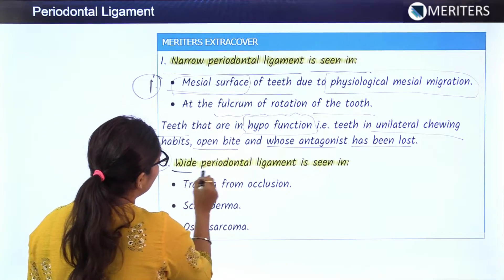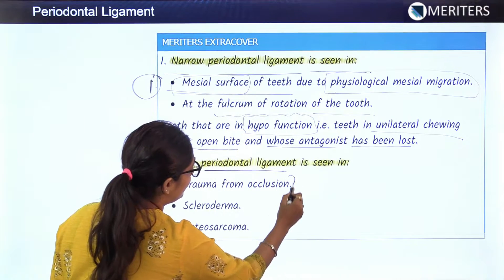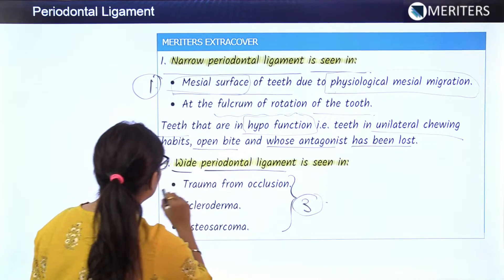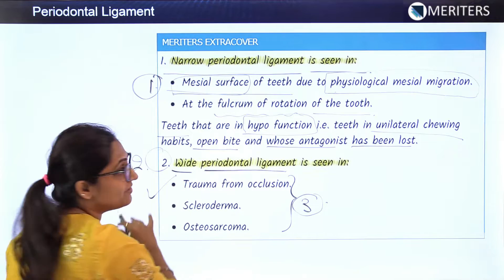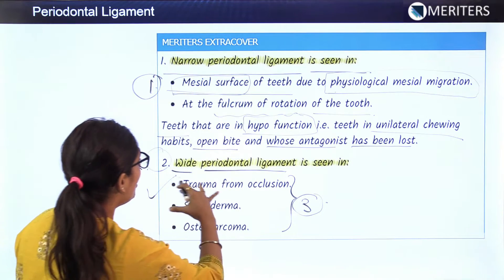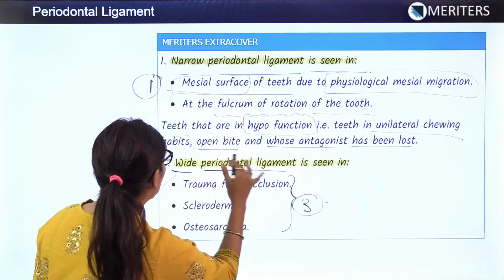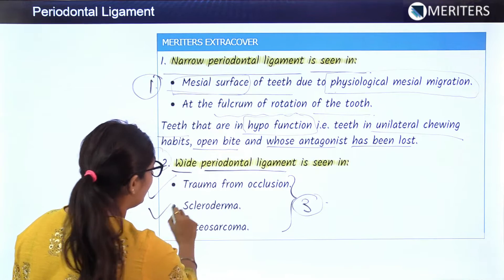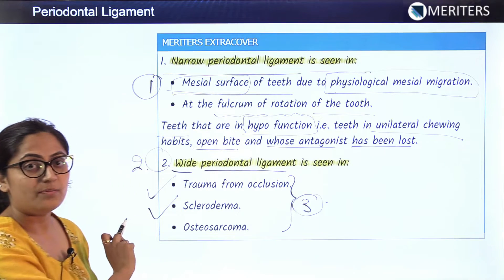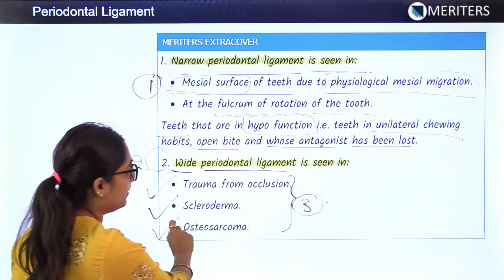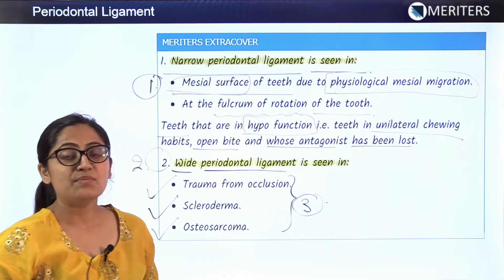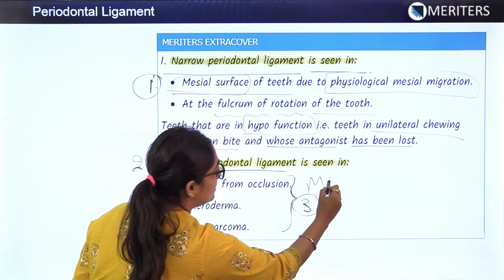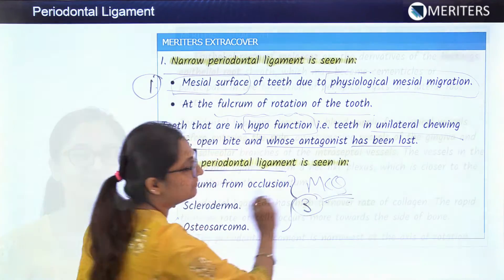The wide periodontal ligament is seen in three major cases: when occlusal forces are high, in trauma from occlusion, in scleroderma, and in osteosarcoma. Many MCQs are asked based on this point, so it must be remembered.